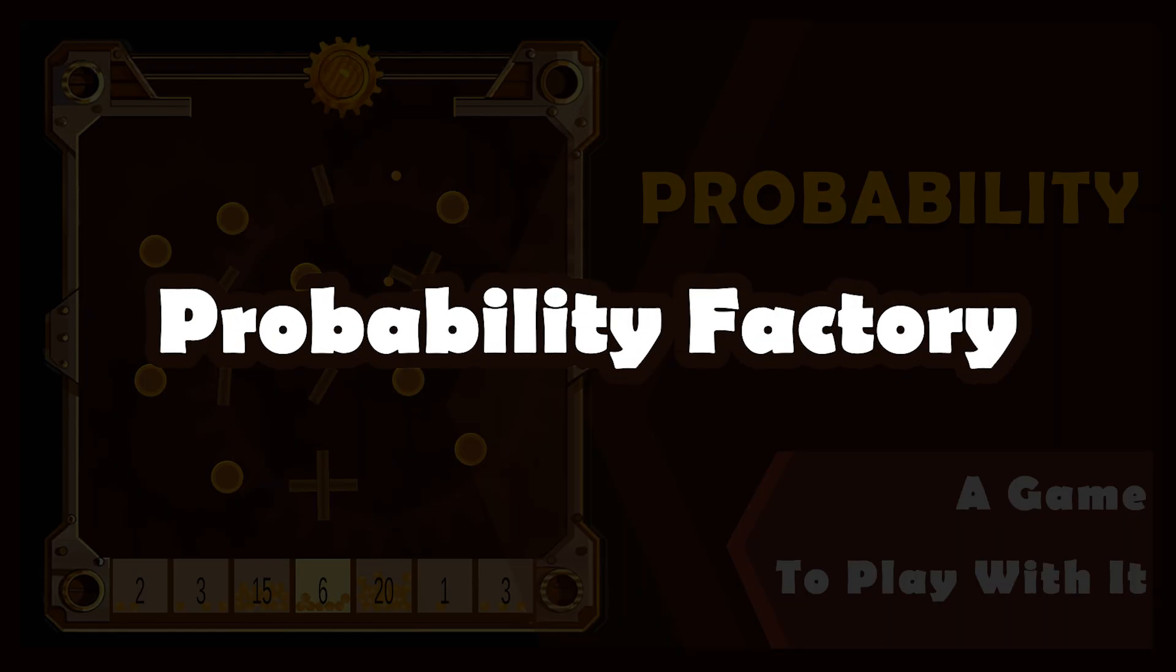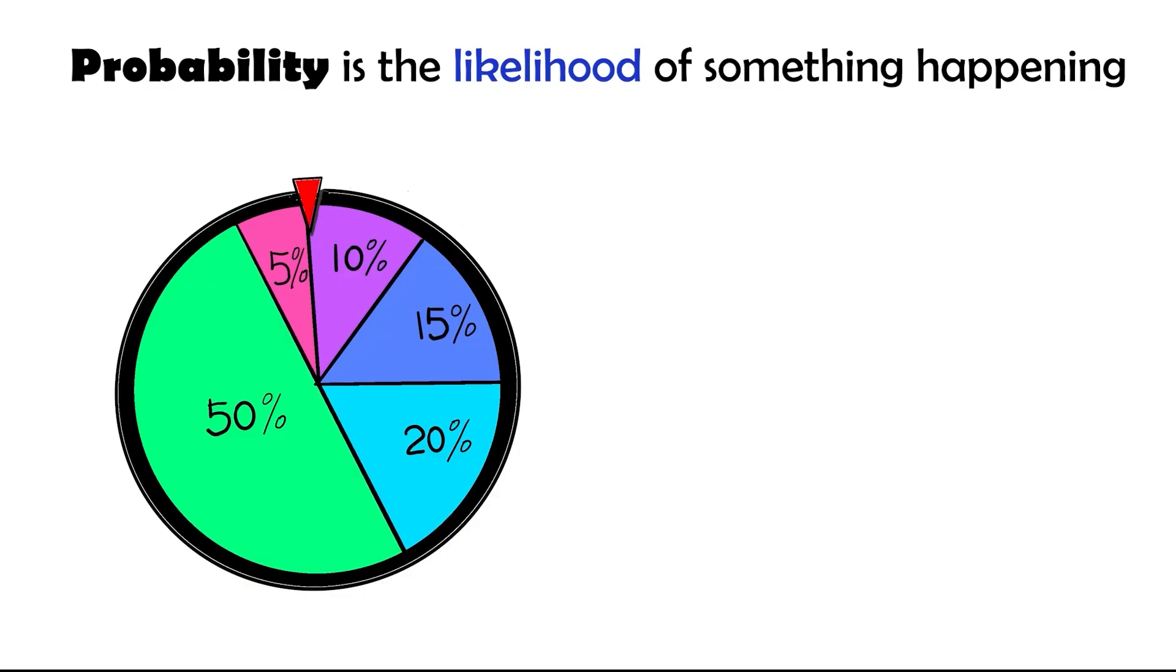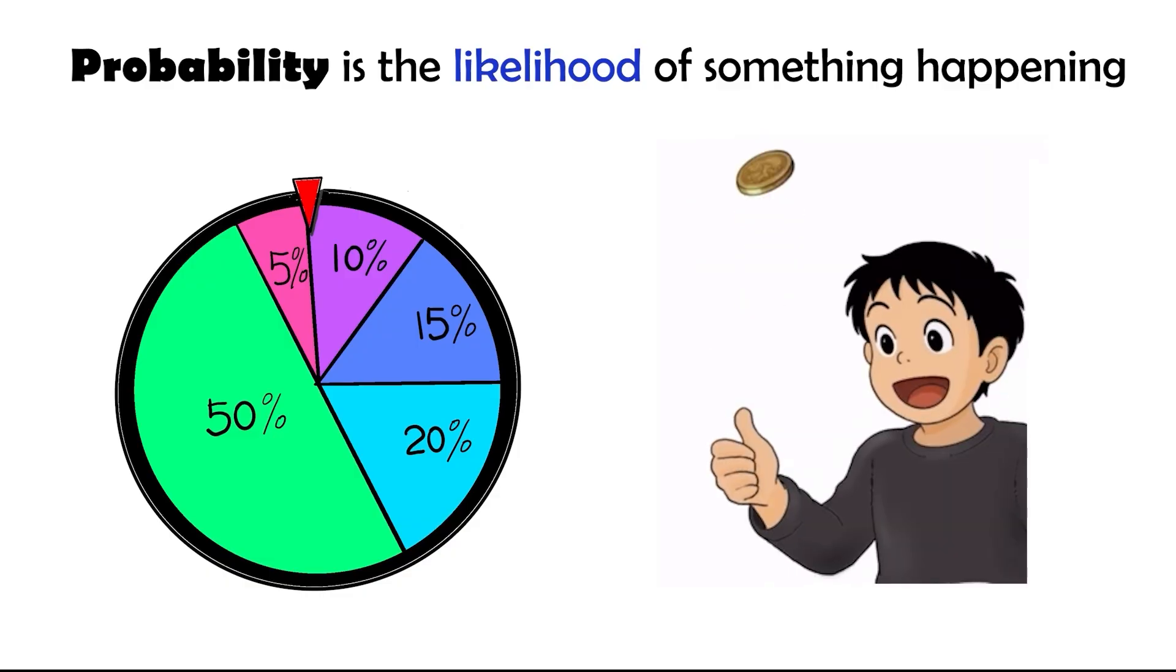Then, probability factory. Probability is the likelihood of something happening, like a 50-50 chance of getting heads when you flip a coin.